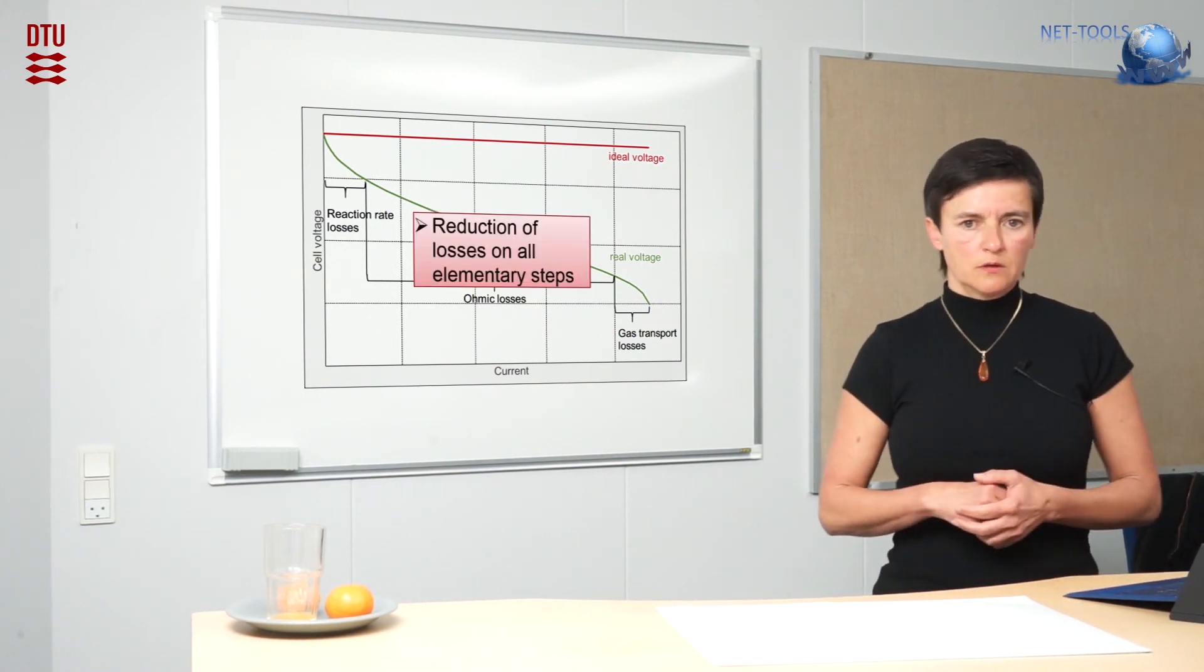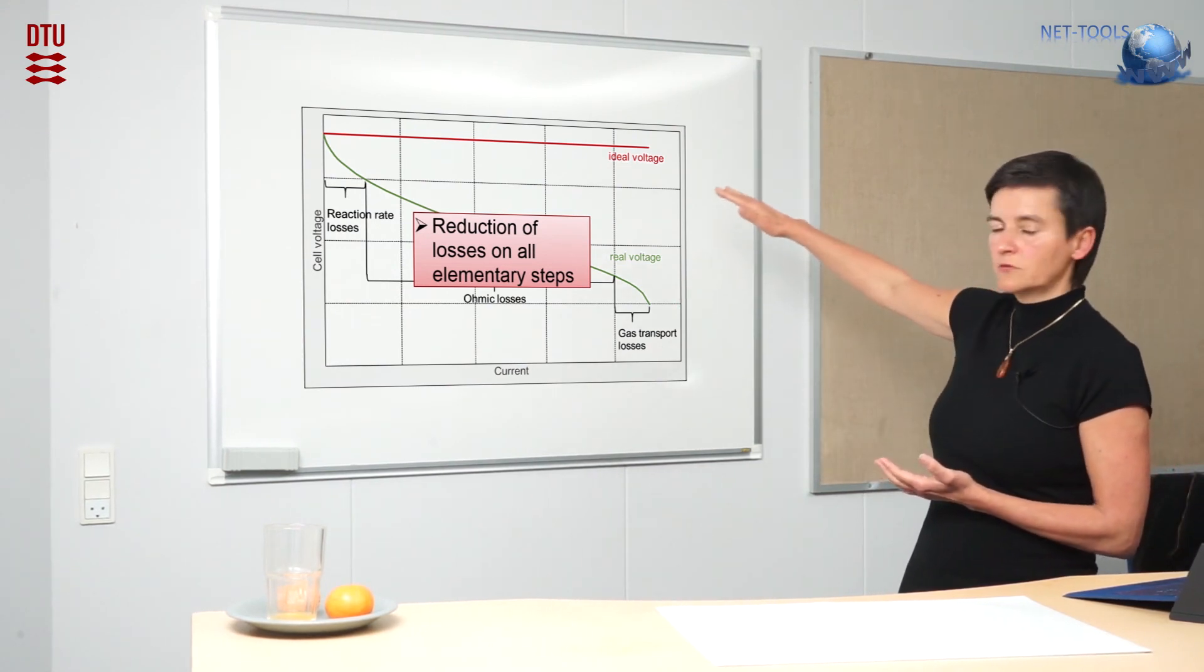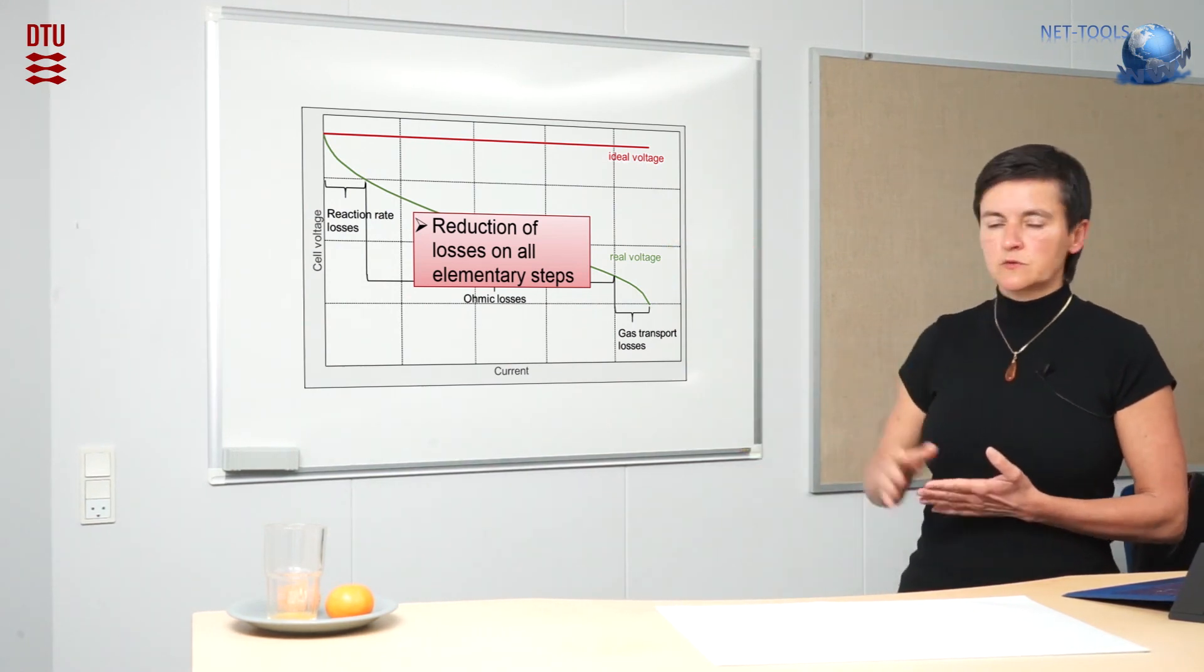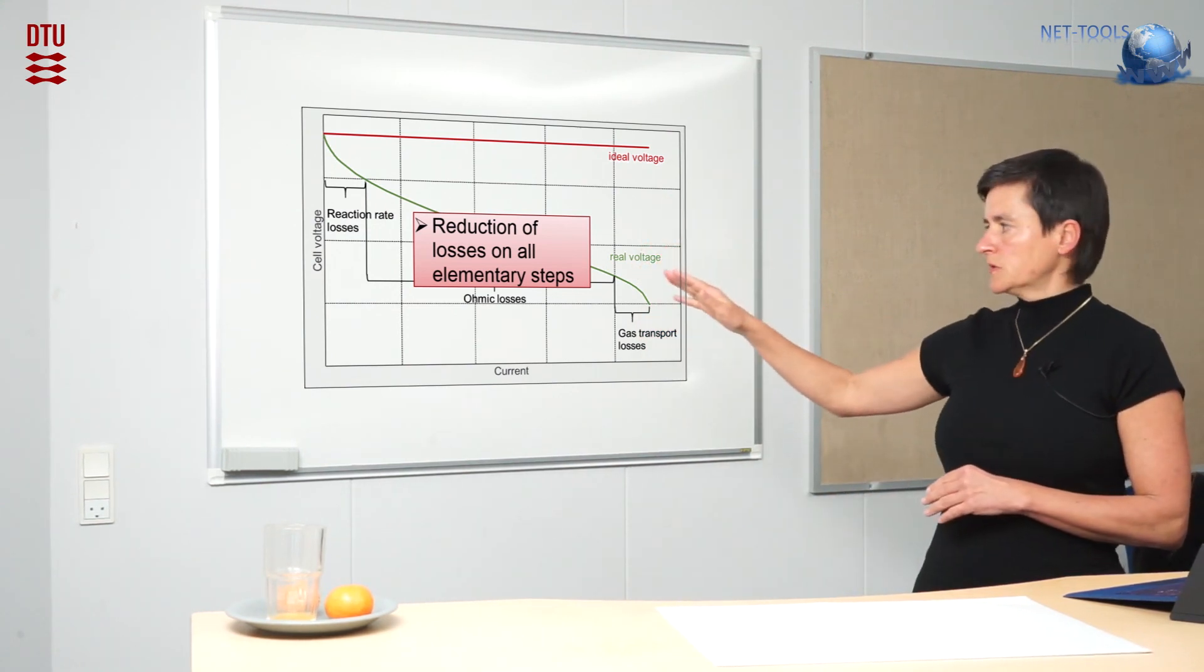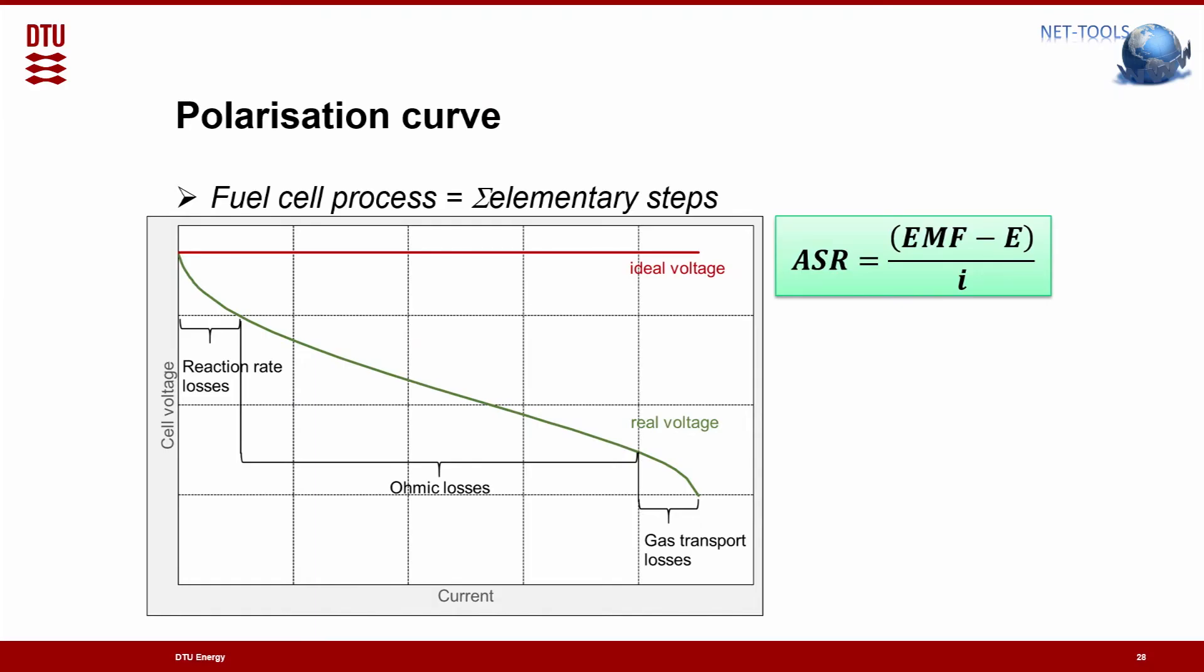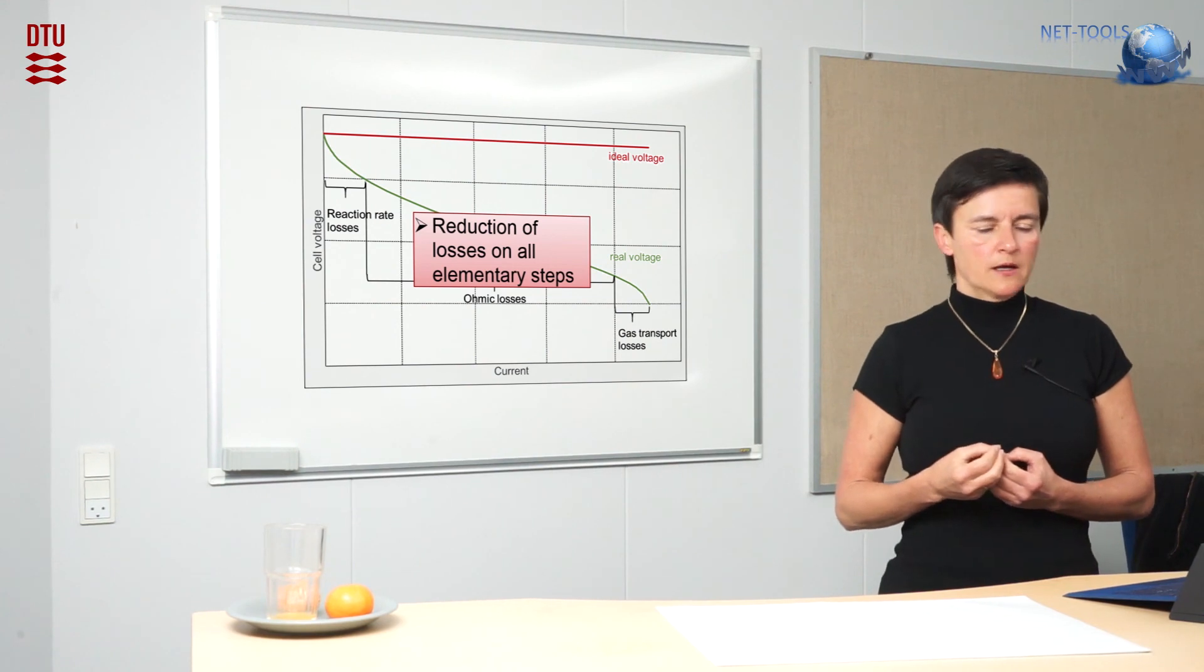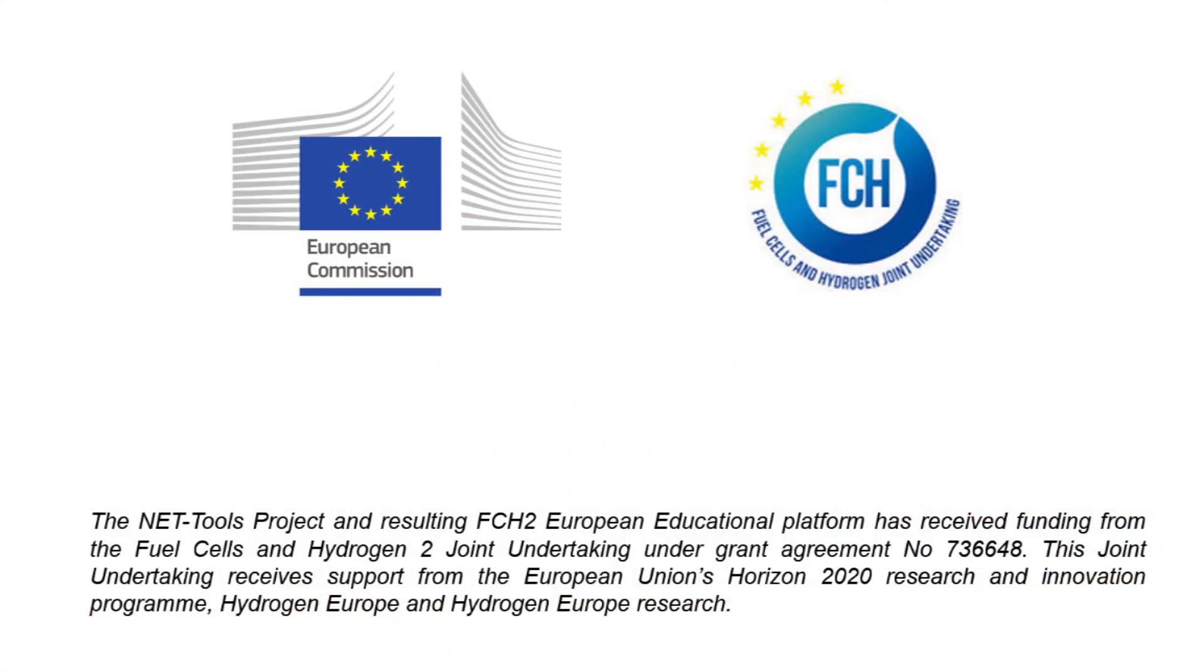And what can we do? Of course, we want to reduce the area-specific resistance so the green curve comes closer to the red curve. And that we can do by different means. We can develop the electrodes to give them more activity, so the first slope is not as steep. We can increase the conductivity of the electrolyte, so then also this slope becomes more flat. And the gas transport - we can provide the optimum pores for the gas to be transported to and from the reaction sites. That way we can also avoid the bending at earlier current densities.